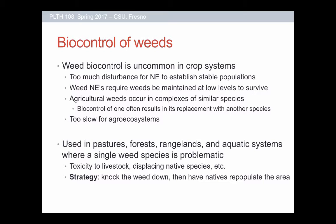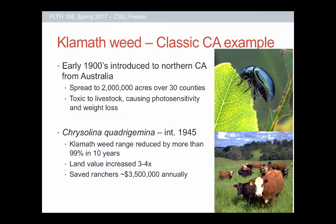Typically we see most biocontrol of weeds in pastures, forests, and rangelands or semi-wild habitats — typically areas where the weed is causing damage to livestock. The ultimate strategy is not necessarily to kill the weed but to provide enough control to knock it down so that native plants can repopulate the area and out-compete the weed in the long term. There was also some extreme success in controlling Klamath weed with the Klamath weed beetle in California.